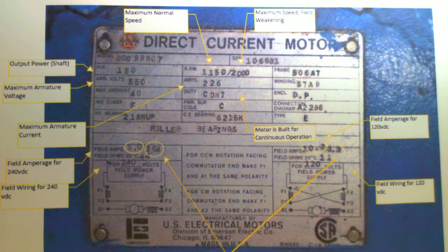This is the nameplate from a U.S. Electrical Motors motor. As you can see, you can read for yourself, it is a direct current motor. But there's some things I want you to make notes about.